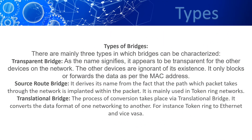Types of bridges. There are mainly three types in which bridges work. Transparent bridge — as the name signifies, it appears to be transparent for the other devices on the network. The other devices are ignorant of its existence. It only blocks or forwards the data after the MAC address.